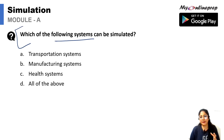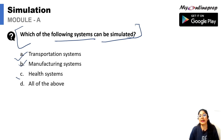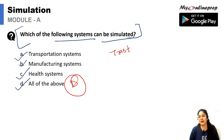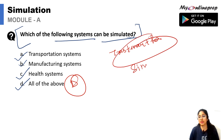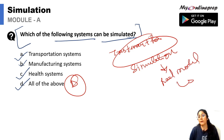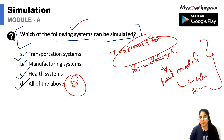Second question: which of the following systems can be simulated — transportation system, manufacturing system, health system, or all of the above? In this case, all of the above would be our correct answer. Simulation helps us understand transportation, manufacturing, health, and many other systems.